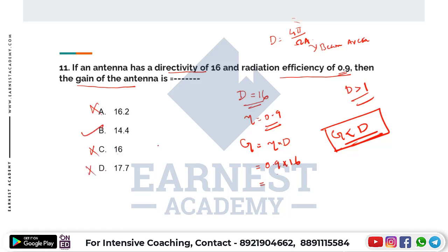The correct option here is B. We can eliminate the other options. The answer is 14.4. The gain of the antenna is 14.4.